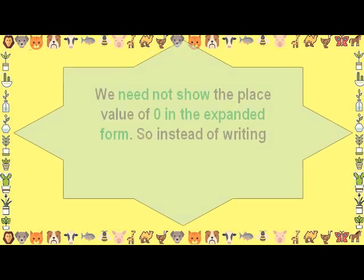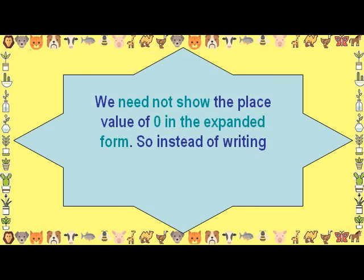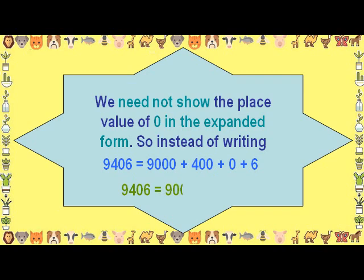We need not show the place value of 0 in the expanded form. So, instead of writing 9406 equal to 9000 plus 400 plus 0 plus 6, we should write it as 9406 equal to 9000 plus 400 plus 6.